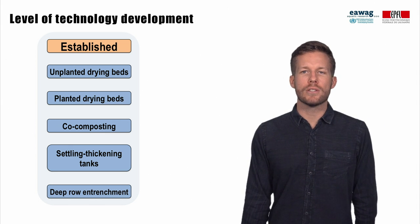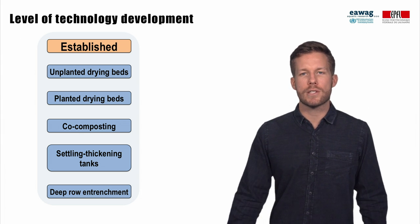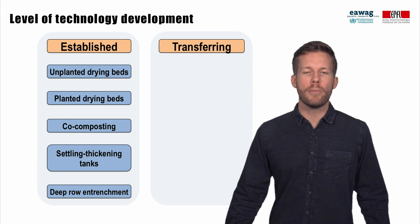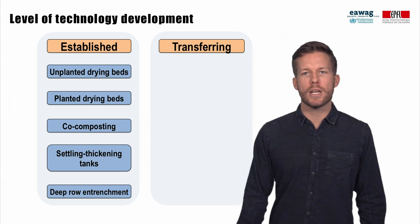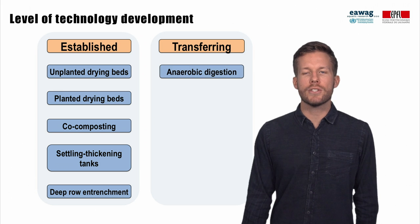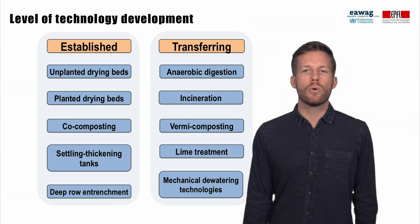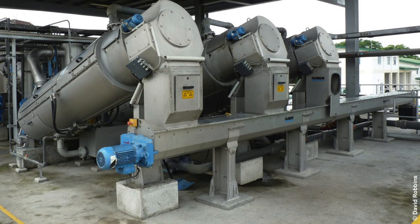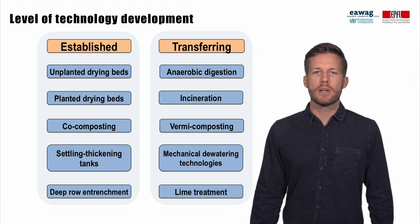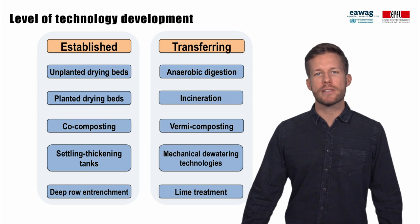In contrast to established technologies, there are technologies that are established for the treatment of other waste, such as wastewater and solid waste. We call these transferring technologies, as information on operation is currently still being transferred and adapted for fecal sludge. These technologies include anaerobic digestion, incineration, vermicomposting, lime treatment, and mechanical dewatering, as shown here for a fecal sludge treatment plant in Malilla. Less reliable information is available on their design and operation with fecal sludge compared to the established technologies.